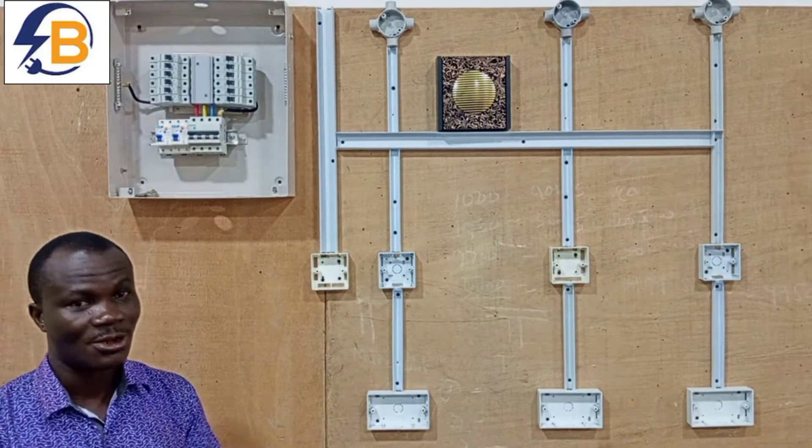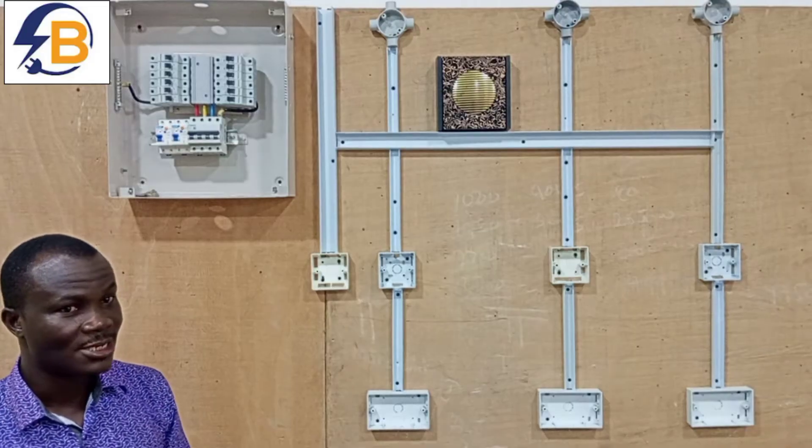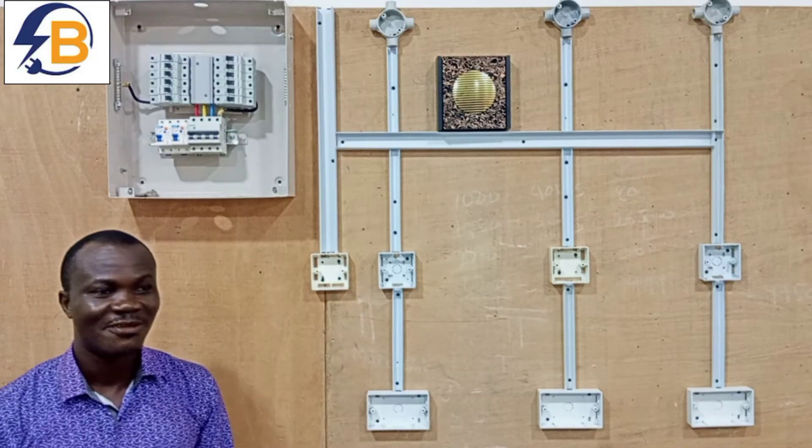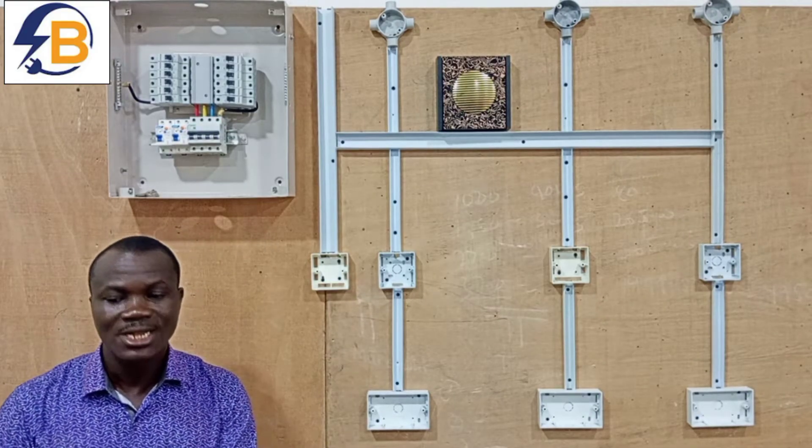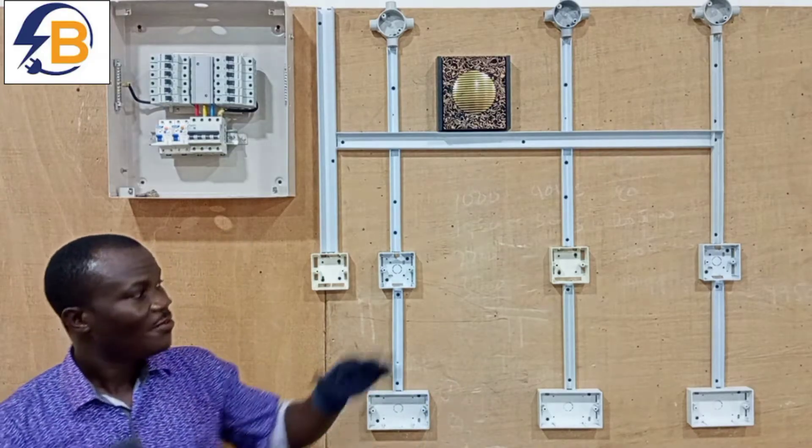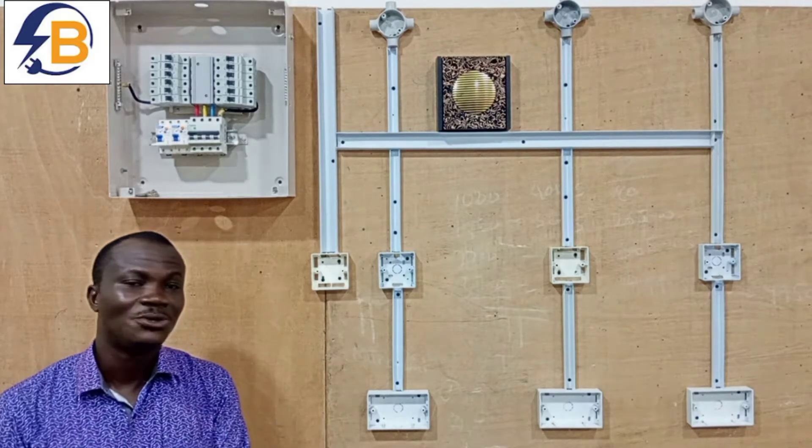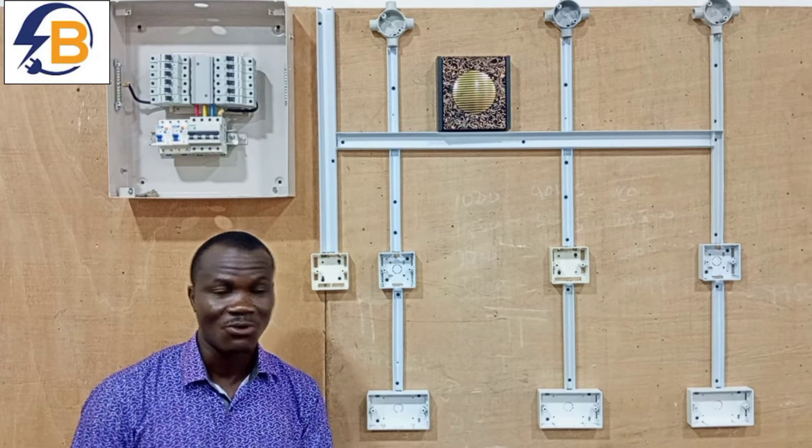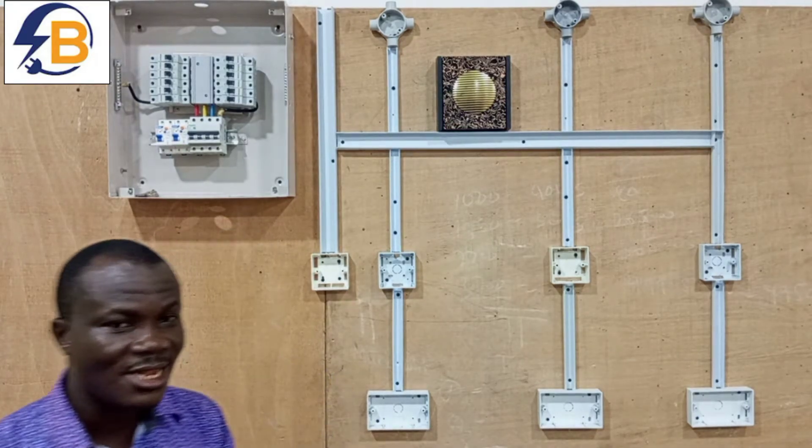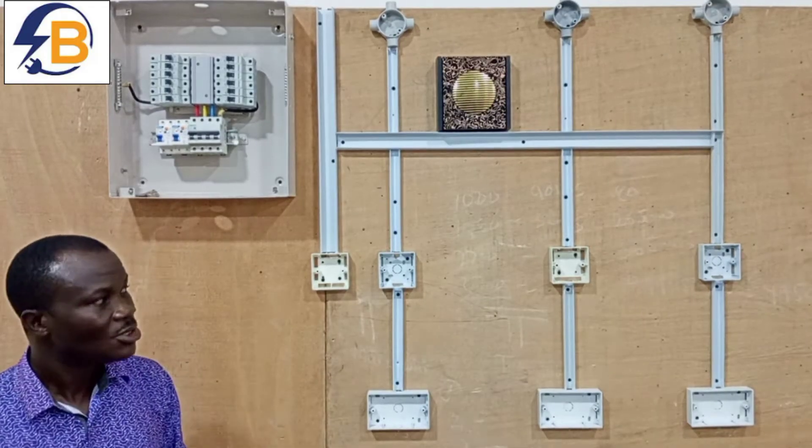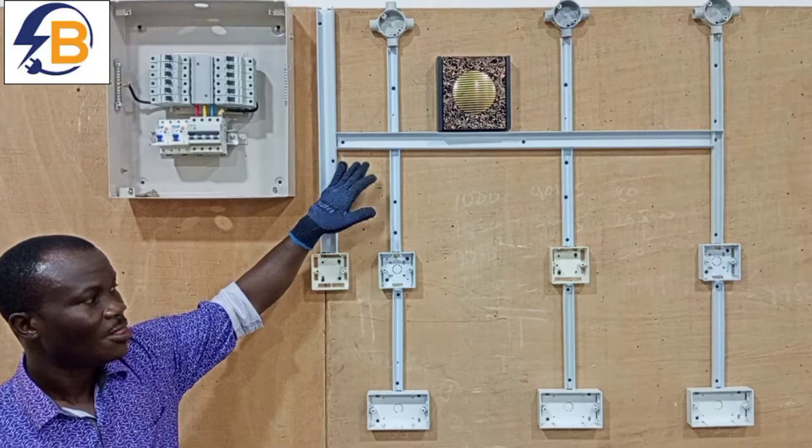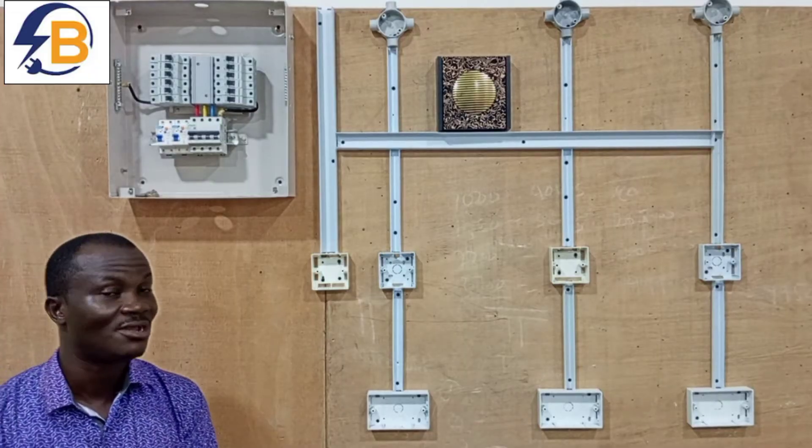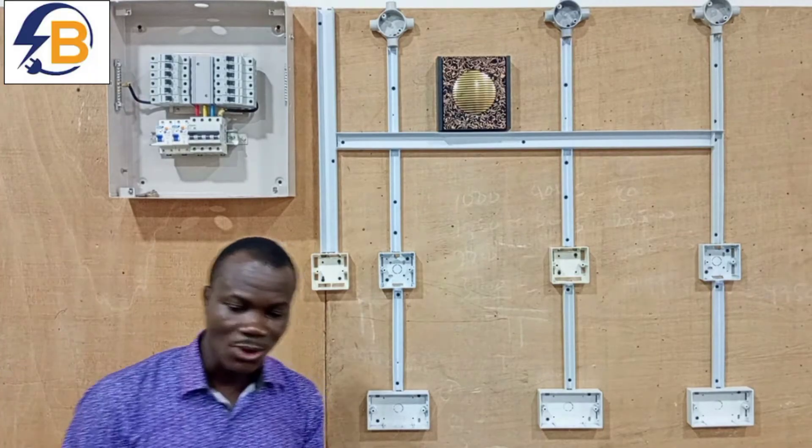After that then you will prepare a list of all the materials that you are going to use in the wiring. I have another video that talks only about the correct names of the various materials that I use in electrical house wiring. The list you have prepared will now guide you to do the laying of the tracking.